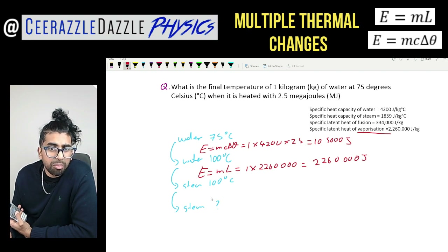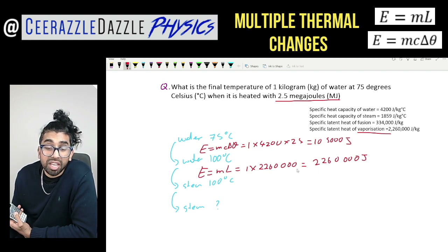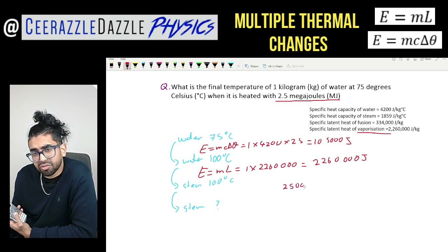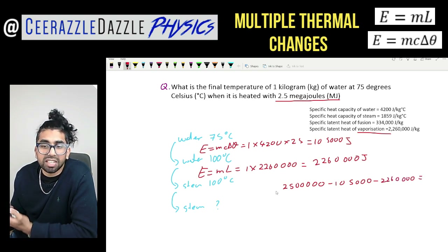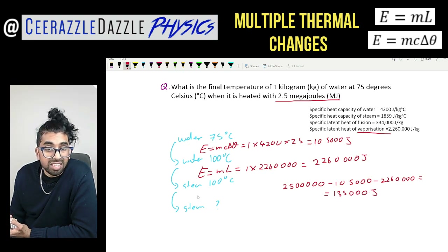For the last process, we find the remaining energy by taking the 2.5 megajoules — which is 2,500,000 joules — and subtracting the energies from stages one and two: 2,500,000 − 10,500 − 2,260,000 = 135,000 joules. That is the energy left over for the final stage.